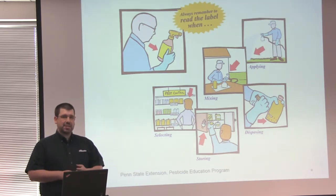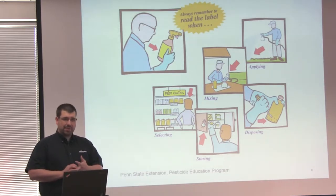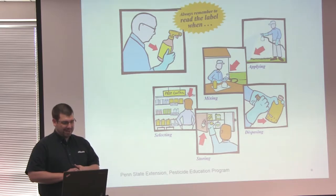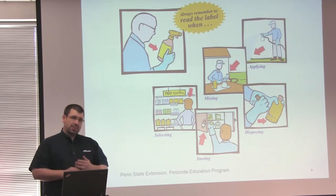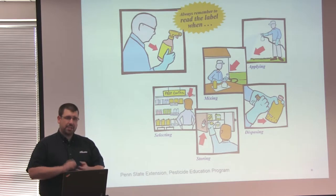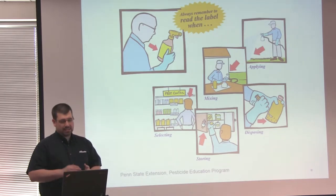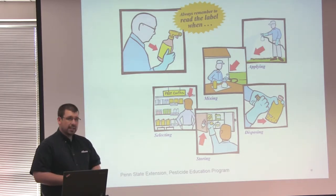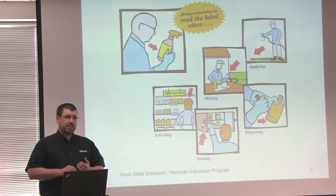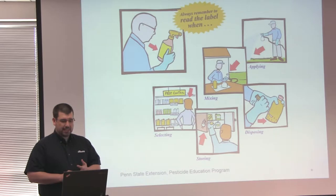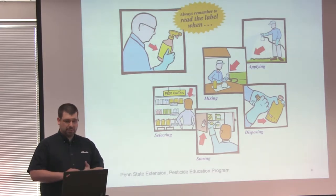Mixing and applying gives us information on how much water to put in, how much pesticide to put in, what crop we need to spray it on, and what pest we need to spray it on. Also, storing is very important because it has very specific information on temperature — some pesticides you cannot have go below freezing, other pesticides you can't store above 100 degrees. And also disposing — the label has very specific information on what to do with the jugs or the bags after you're done using the pesticide, or even how to dispose of the product itself.